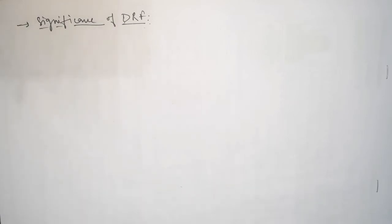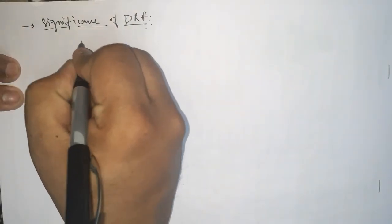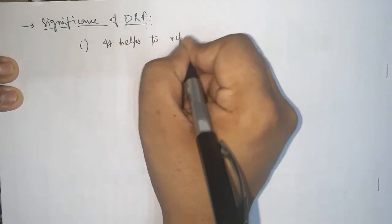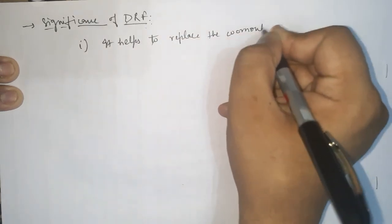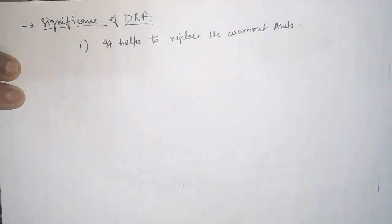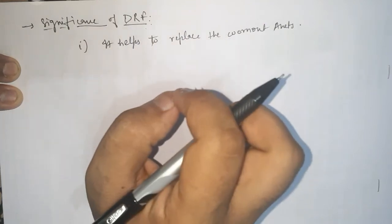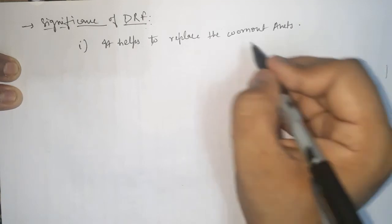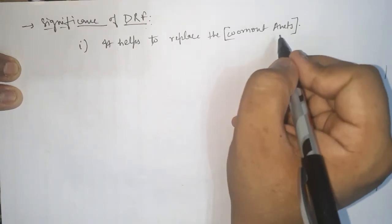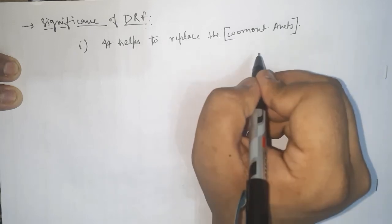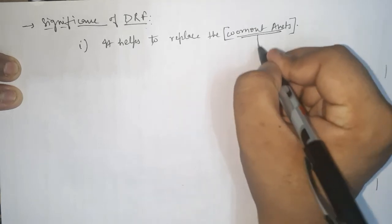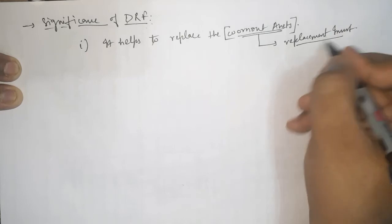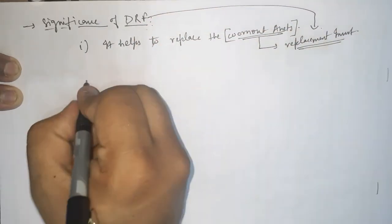So this is called your DRF — Depreciation Reserve Fund. Now we will understand its significance. The first significance is that it helps to replace worn-out assets. By creating DRF and keeping a certain amount of money aside, this fund will help you do the replacement investment in future. Because with the course of time those assets on which you did gross investment will keep depreciating, and when the time comes you have to replace them — the funds for that replacement investment come from the DRF.